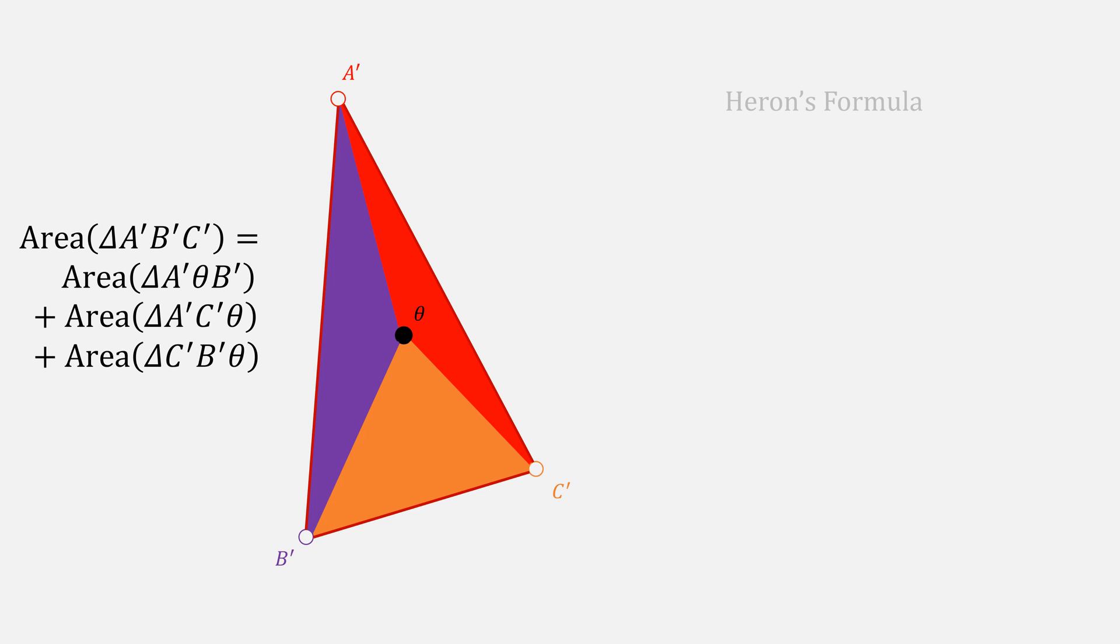You can figure out the area by using Heron's formula, labeling each of our lengths as A, B, and C, computing the semi-perimeter, and plugging them into this formula.